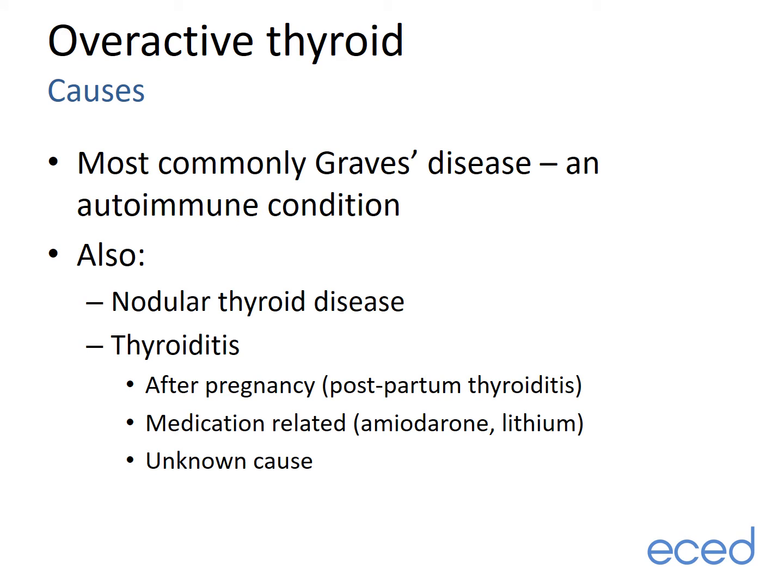Overactive thyroid is most commonly caused by Graves disease, an autoimmune condition where the body's immune system attacks your own thyroid gland. Rarer causes include small benign nodules in the thyroid gland which start to produce uncontrolled amounts of thyroid hormone. Thyroiditis means inflammation of the thyroid and can occur shortly after pregnancy, when it is called postpartum thyroiditis. This is often followed by a spell of underactive thyroid and often a return thereafter to normal thyroid function. Some medications can also increase the risk of thyroid inflammation, but often the cause is never identified.